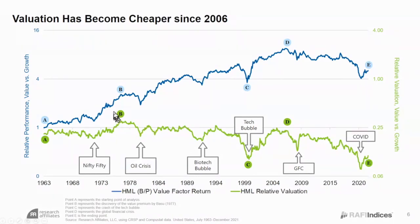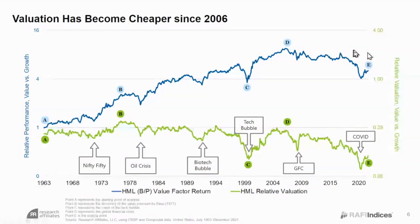We've seen drawdowns before — in the nifty-fifty, the oil crisis, the biotech bubble, the big tech bubble, and a sharp one in the global financial crisis. Using measures other than price-to-book, the peak isn't necessarily 2007; using price-to-sales, it's 2017, making this peak higher than 2007. No matter how you define value, the meltdown from 2017 to late 2020 — a three-and-a-half-year meltdown — was brutal to value managers and was the largest drawdown in history.